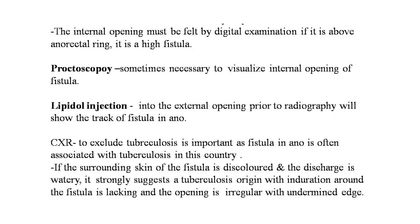The internal opening must be felt by digital examination; if it is above the anorectal ring, it is a high fistula. Proctoscopy is sometimes necessary to visualize the internal opening. Lipiodol injection into the external opening prior to radiography will show the fistula tract. Chest X-ray to exclude tuberculosis is important as fistula in ano is often associated with tuberculosis. If the surrounding skin is discolored, discharge is watery, induration is lacking, and the opening is irregular with undermined edges, this strongly suggests tuberculous origin.